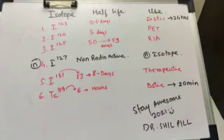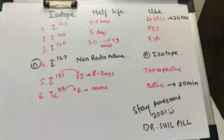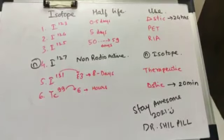You may see the number 59 written beside 50 for the half-life of iodine-125. To make the mnemonic easier, 50 was chosen, but the actual half-life is 59 days. This is important because in an MCQ exam, the closest option around 59 might be 60 days, so don't get confused.